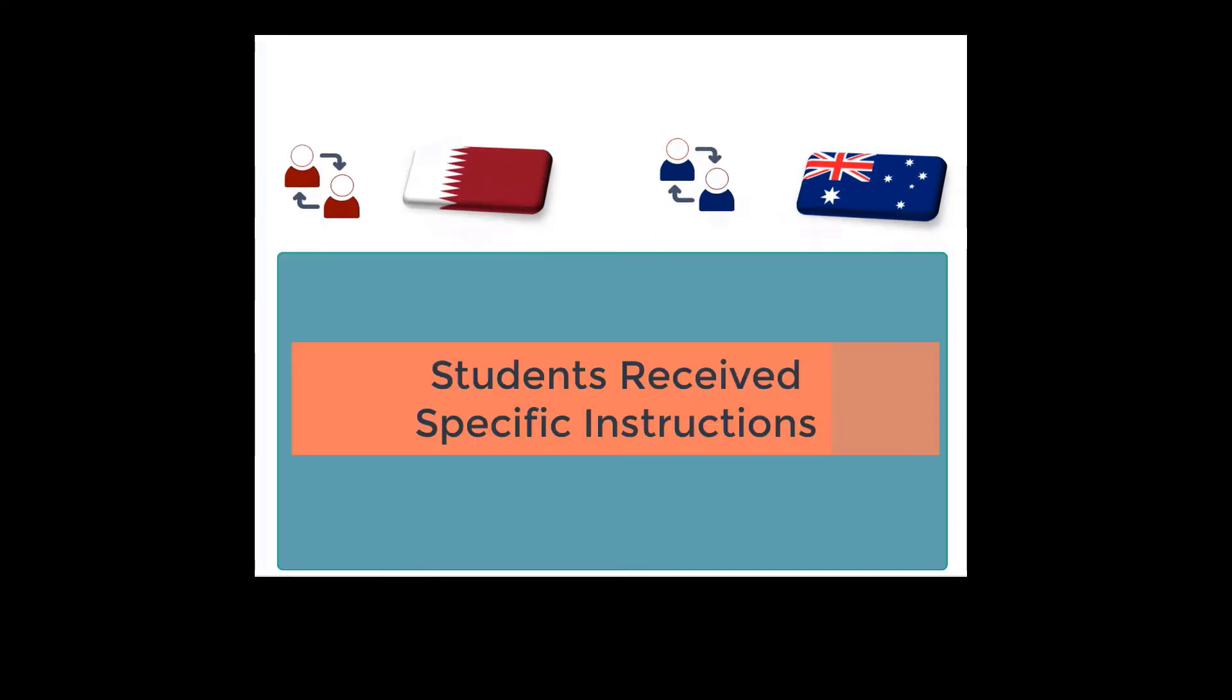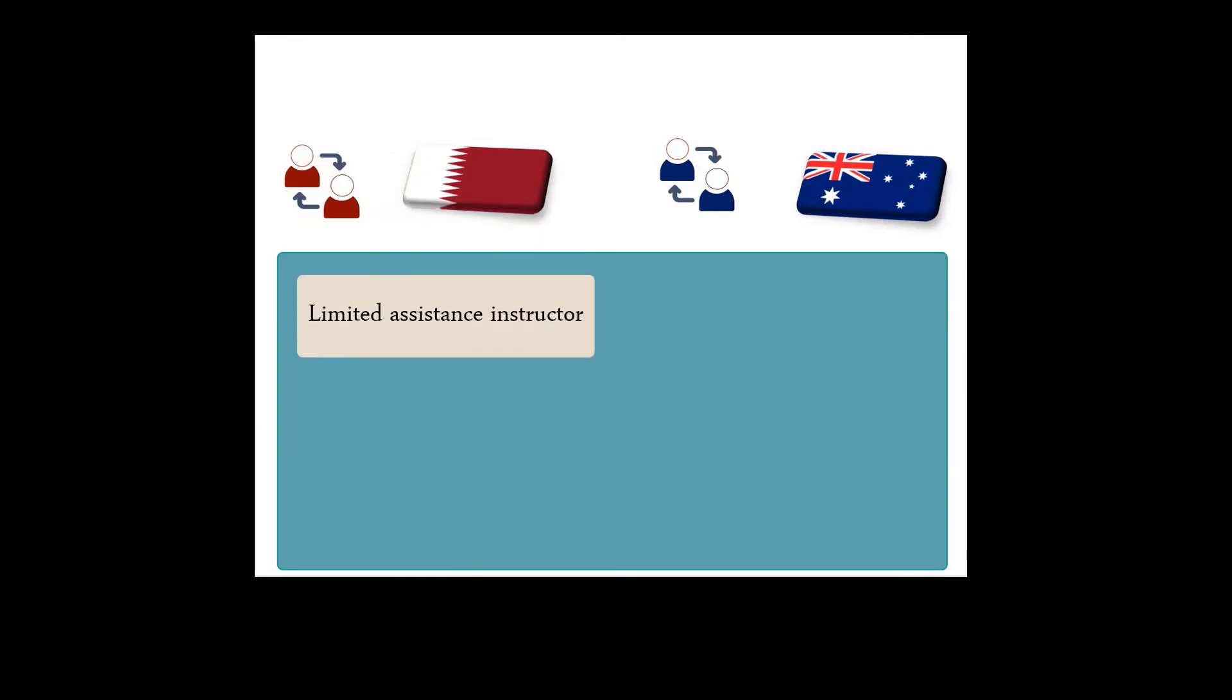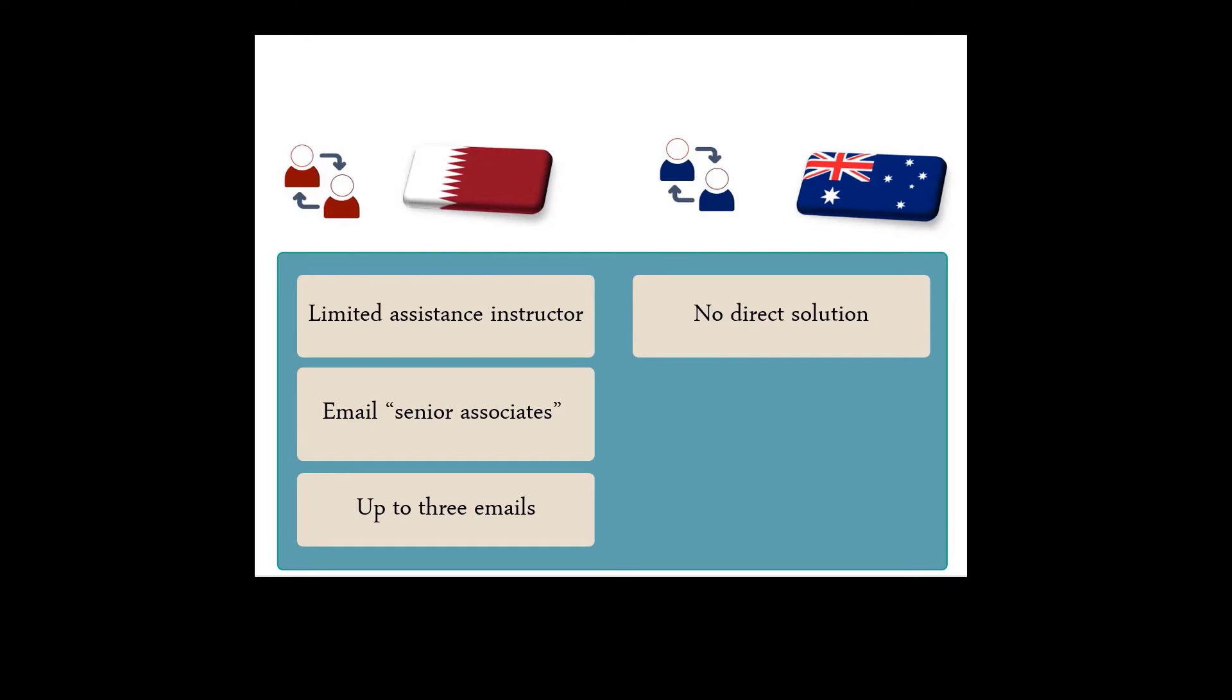There were some rules that govern this communication between the consultants played by the Qatari students and the Bond University students. First, Qatari students were not to receive any additional assistance by their instructor. They could email the senior associates in Australia for mentoring and guidance, but they were only limited to three emails. Students in Australia could not provide direct solutions. They could only provide guidance and mentoring to the students in Qatar.